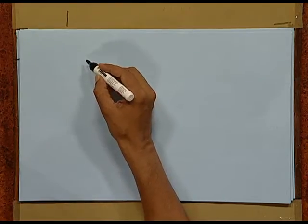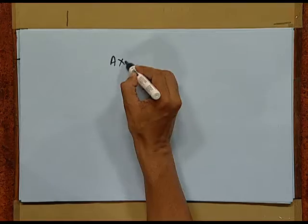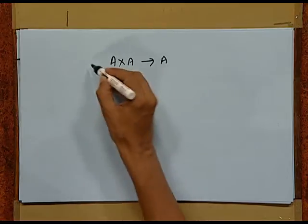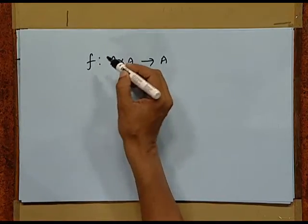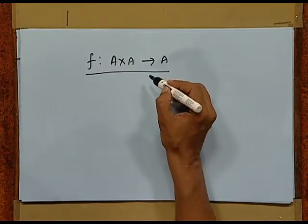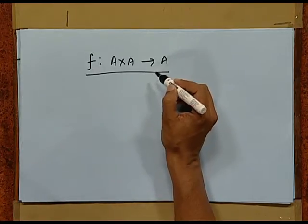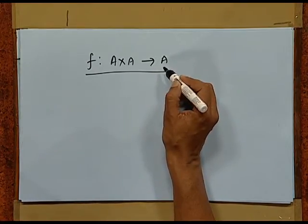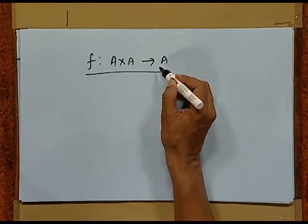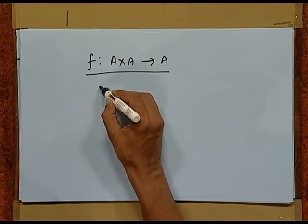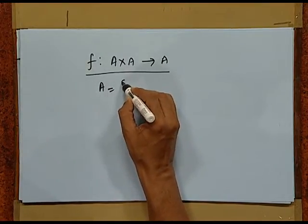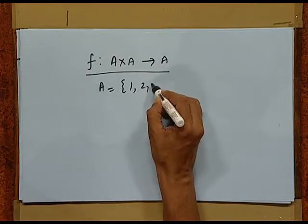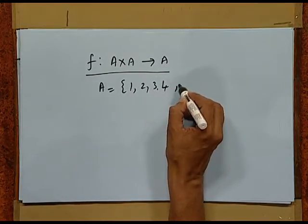What is a binary operation? A binary operation is just a function from the set A cross A to A. So, it is merely a function whose domain is A cross A and co-domain is A. For instance, we have a set A, suppose {1, 2, 3, 4, 5}.